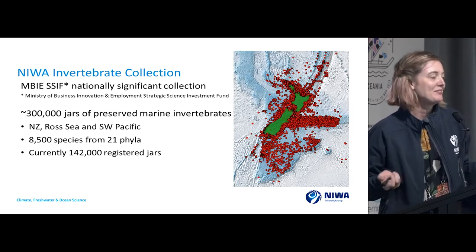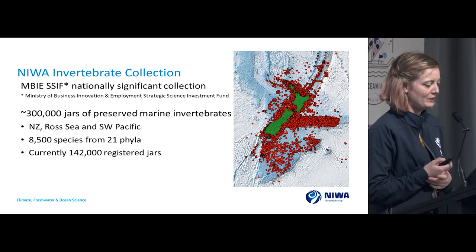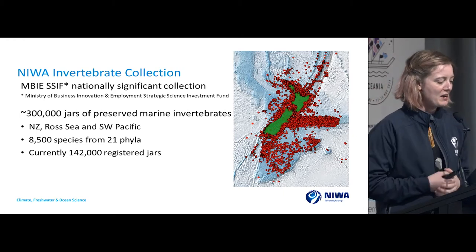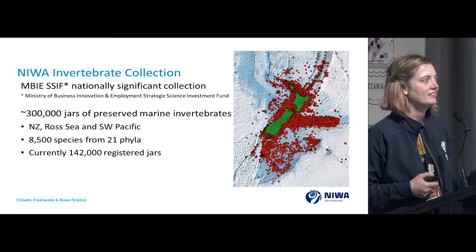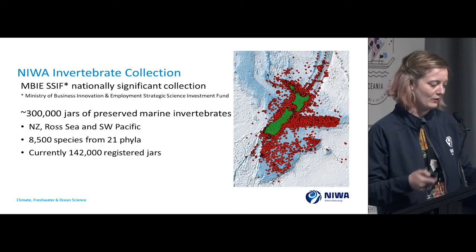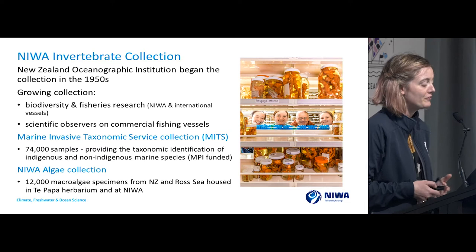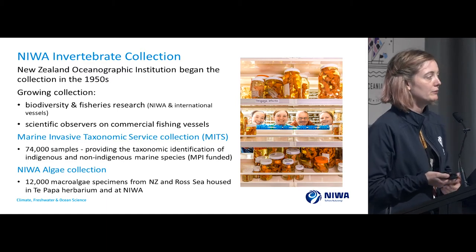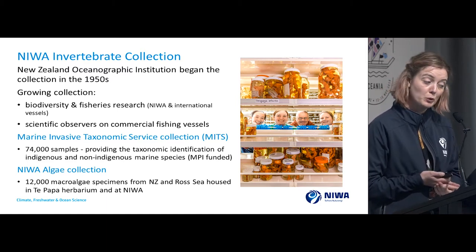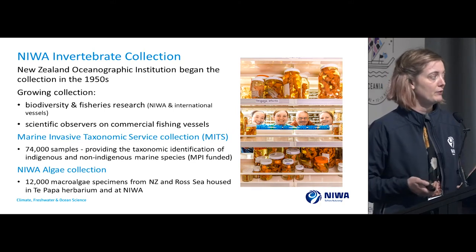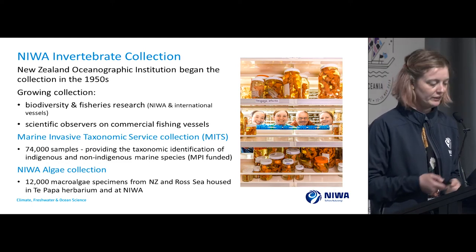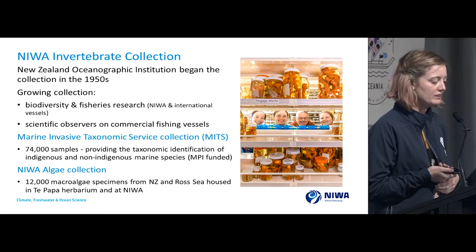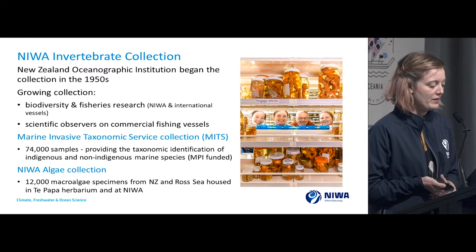We have specimens from New Zealand, from the Ross Sea, and from the wider South West Pacific. We cover 8,500 species from 21 phyla — those are the big groups — and we have about 142,000 registered in our database, so we have quite a long way to go to catalogue everything. The collection began in the 1950s with the New Zealand Oceanographic Institute and we're still collecting today on biodiversity and fisheries research. We also receive great samples from scientific observers on commercial fishing vessels. We also house the marine invasive taxonomic collection, which has 74,000 samples.